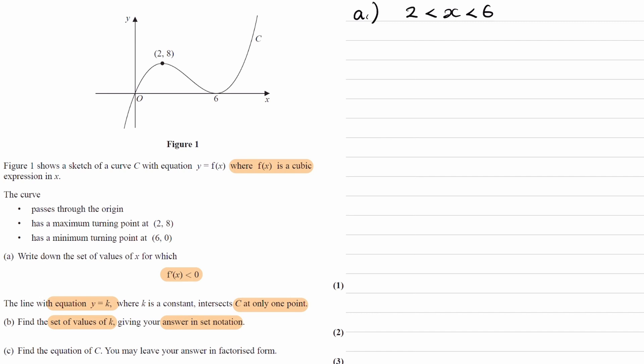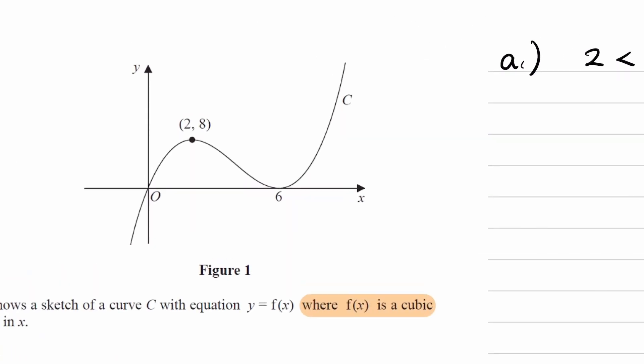And that would be, if we consider this line to cross through that maximum turning point, this value of y would be 8. So the equation of this line would be y is equal to 8. This line here would be y is equal to 0. And if our line y is equal to k is above this line and beneath this line, then that means that the line y is equal to k will cross the curve at only one point.